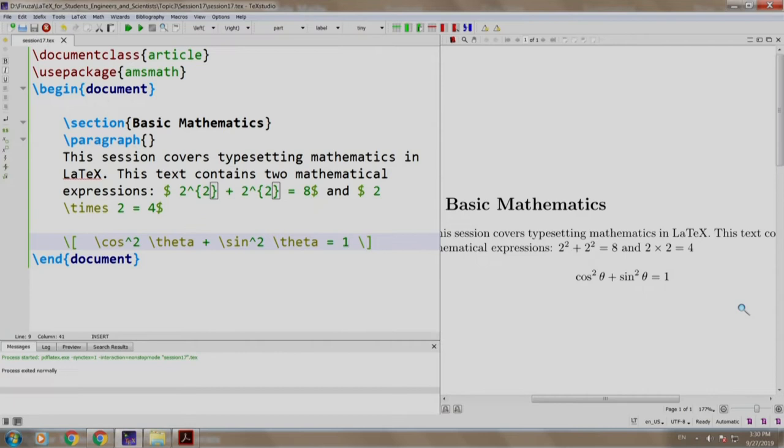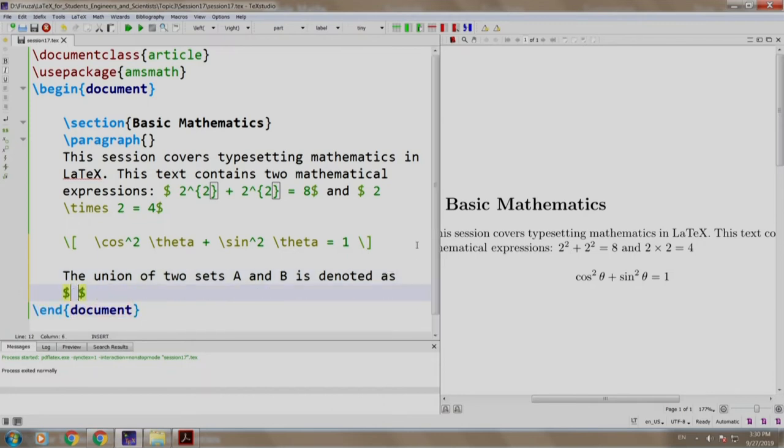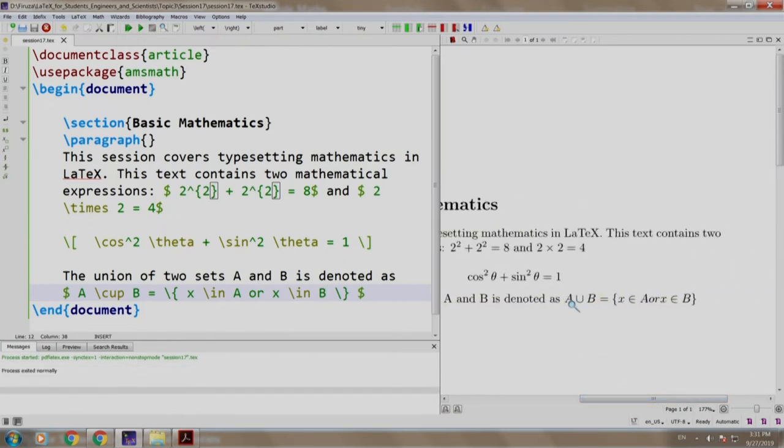Now, let us try another example which has some set theory symbols. For example, the union of two sets A and B is denoted as, in dollar a cup b equal to in curly brace, we escape it by the slash character and we write x in a or x in b. Let us build and run. The union of two sets A and B is denoted as a union b equals x lies in a or x lies in b. It looks good, but not great.